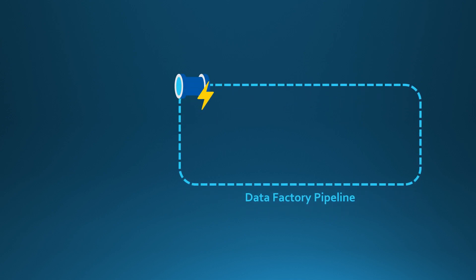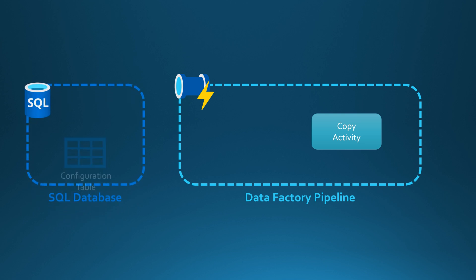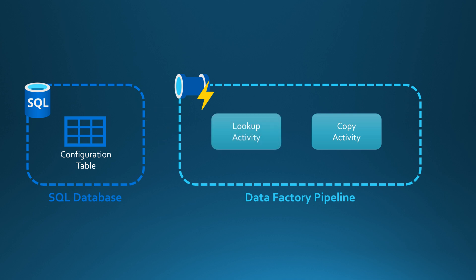Let's imagine a situation where we have a Data Factory pipeline with a copy activity. We also have a SQL database with a configuration table, and we would like to use the contents of that configuration table to instruct our copy activity to copy some data. We can use the lookup activity to fetch the contents of that configuration table and have them available in our pipeline for the copy activity to use.